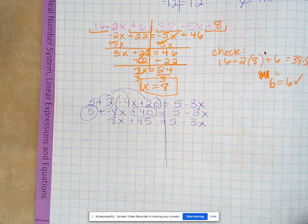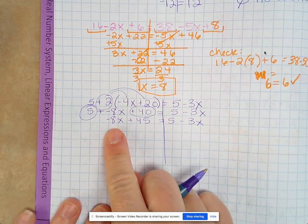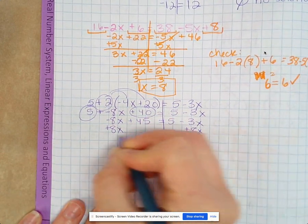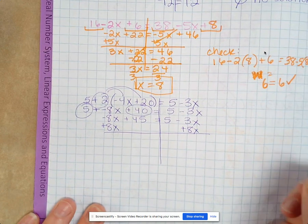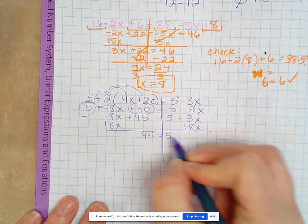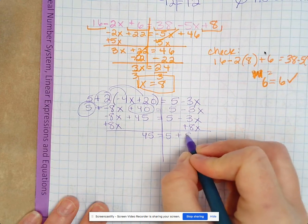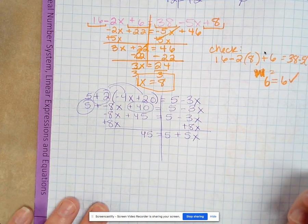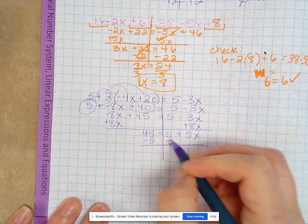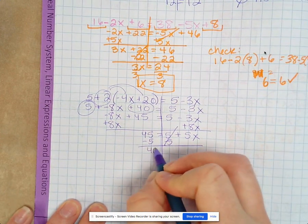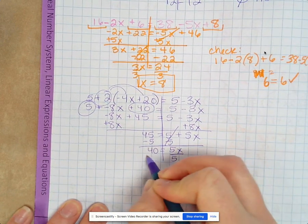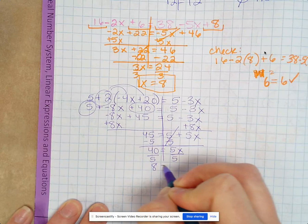So we want to move the smaller x, so this negative 8x is smaller. So we'll do plus 8x. And we get 45 equals 5 plus 5x. Subtract 5 on both sides. 40 equals 5x. Divide by 5. So 8 equals x.